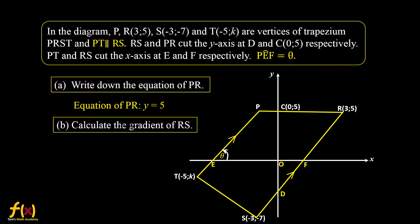Question B: calculate the gradient of RS. We have the points R and S. We take the formula from the information sheet, substitute the coordinates, and use the calculator. We get the gradient of RS, which is MRS = 2.